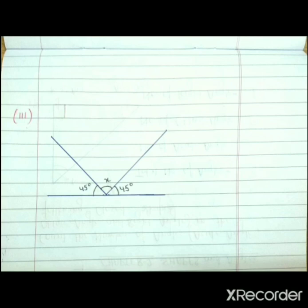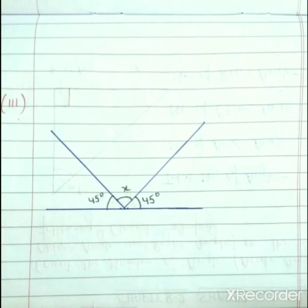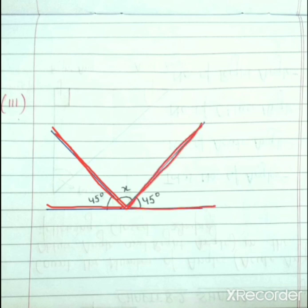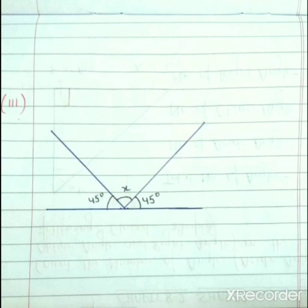Now this is the third figure. In this figure, this is 45 degree angle, this is angle x, and this one is also angle 45 degree. So to find the value of x, we will subtract this angle and this angle from the whole angle.